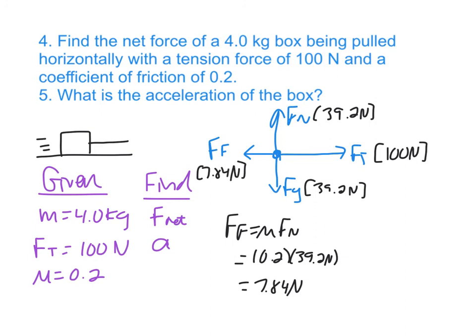From the force diagram, I know that net force is equal to right minus left. So F net equals FT minus FF, which is 100 newtons minus 7.84 newtons. So my net force equals 92.16 newtons.